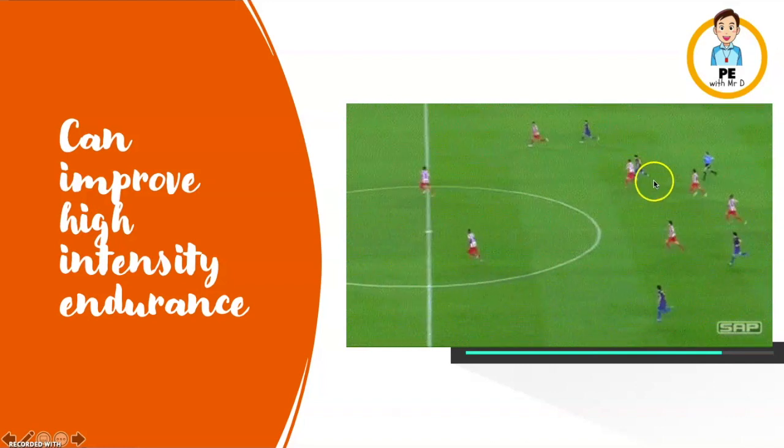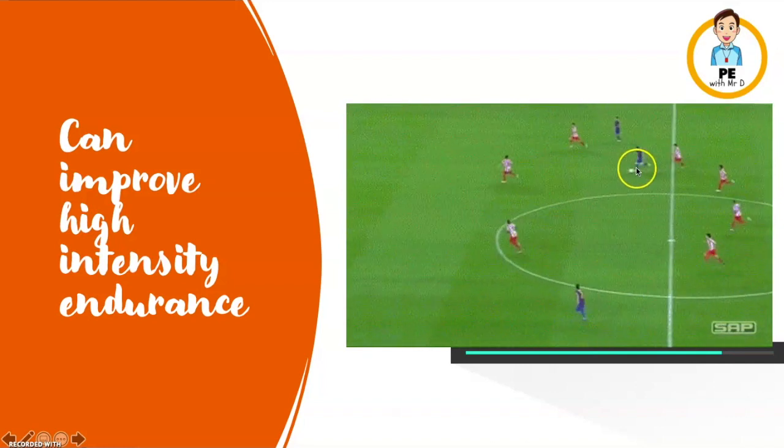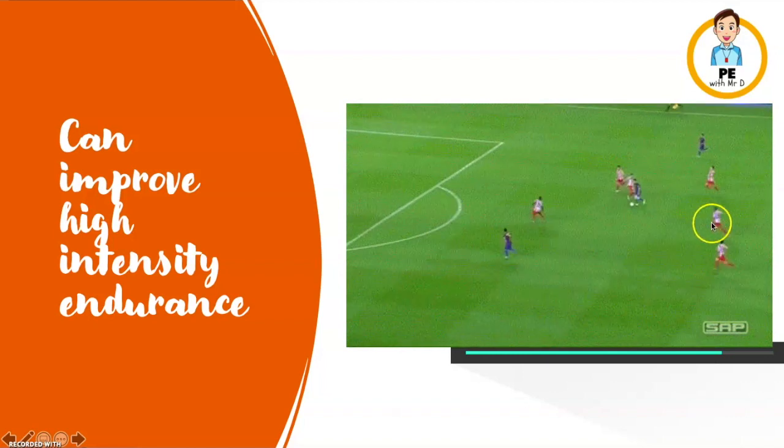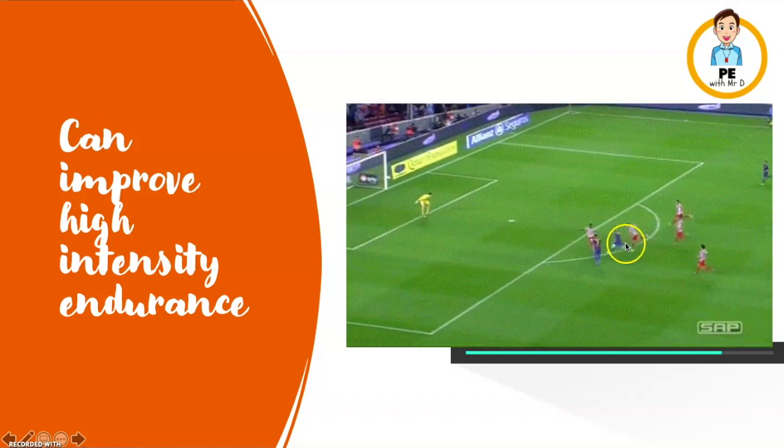Represented visually, it might look something like this. Athlete A with Bicarbonate Soda is able to go longer, harder and stronger while the other athletes are not able to keep up the same intensity.